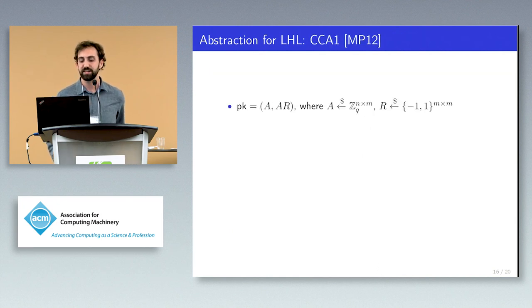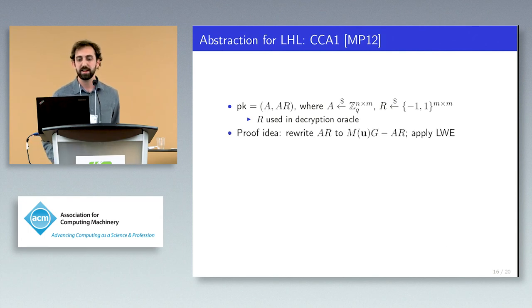Now, my second example comes from a security proof from a CCA scheme. In this scheme, the public key is the pair A comma AR, where A is uniform and R is a random bit matrix. Here, R is used as a secret key, which means it appears in the decryption oracle for the adversary. In the proof, we make the rewrite A times R to M of U times G minus AR, where U is generated during challenge encryption and G is a publicly known gadget matrix. Again, this can be argued to be valid due to the leftover hash lemma and optimistic sampling.